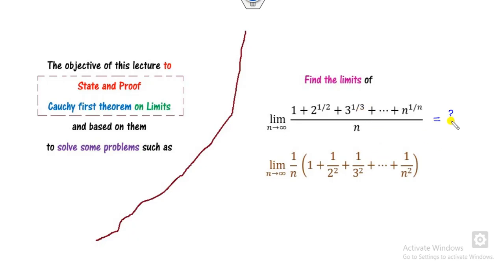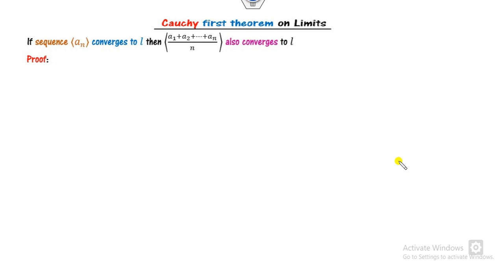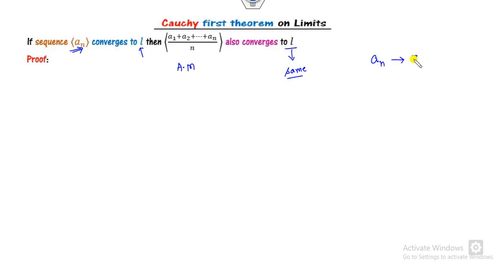Our target is to find the limit of such sequences. So what is Cauchy's first theorem? If you have a convergent sequence a_n which converges to l, then the arithmetic mean of this sequence also converges to the same limit l. For example, if a_n converges to 7, then the arithmetic mean — that is, the sum divided by n — also converges to 7.